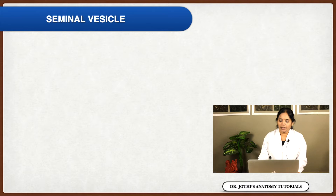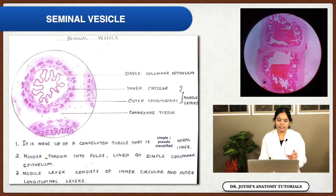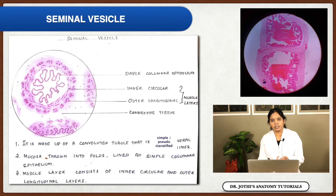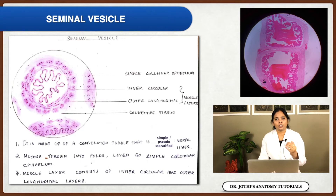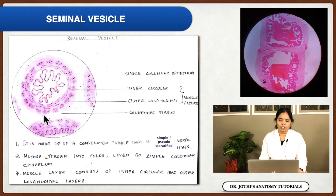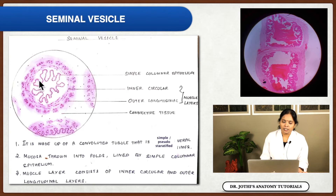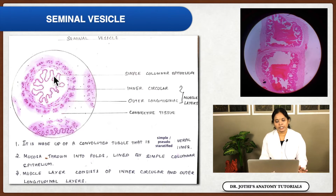The next structure is the seminal vesicle. It is a sac-like glandular structure and an accessory sexual organ. Since it is a highly coiled structure, when you take a section you will see many sections of convoluted seminal vesicle tubules. It is lined by simple or pseudostratified columnar epithelium, and the mucosa is thrown into many folds.